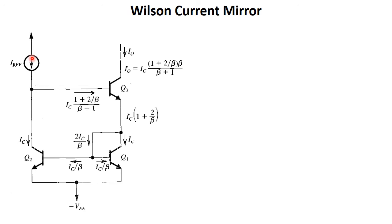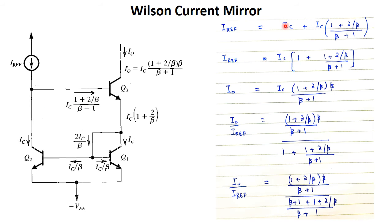I-reference is equal to IC plus the base current of Q3 — that is, IC multiplied by (1 + 2/β) divided by (β+1). I-out is the collector current of Q3. Taking the ratio I-out over I-reference gives 1 plus 2/β, times β over (β+1), divided by the full I-reference expression.